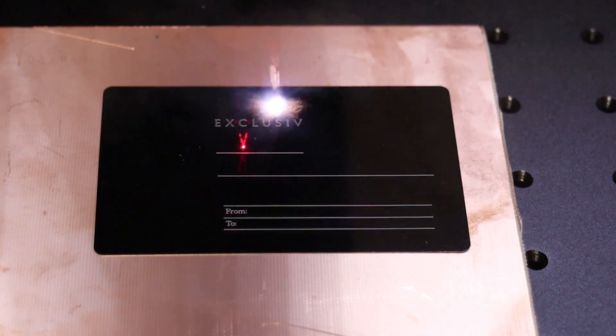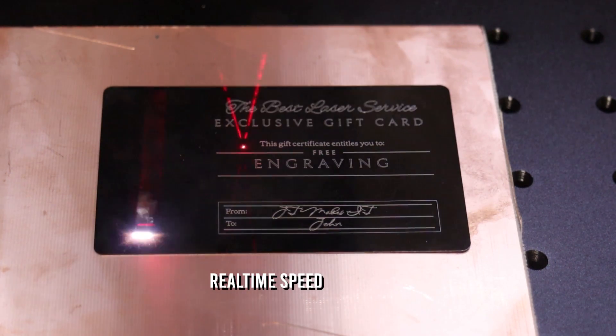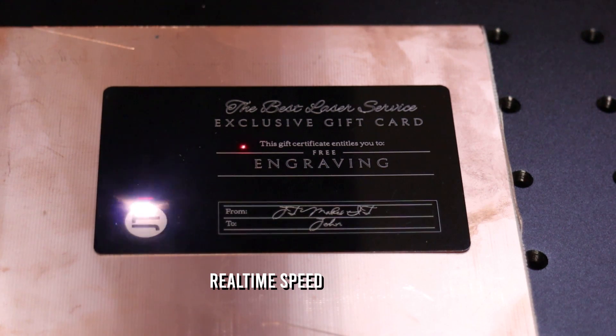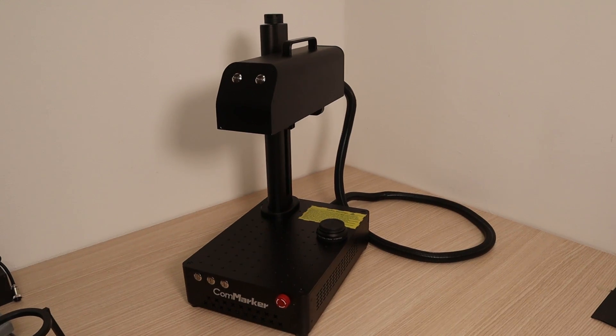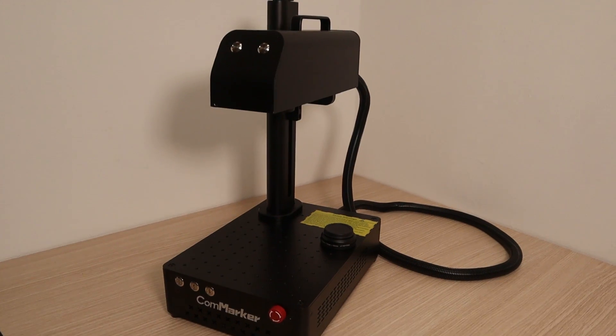Today, for the second time in a row, I have a completely different kind of laser engraver to show you. This is the Comm Marker B4, a 20W fiber laser marking machine.